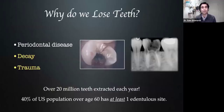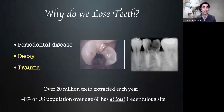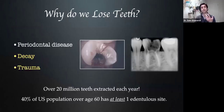The main reasons that we lose teeth are either periodontal disease or decay. Of course, the third outlier is trauma. As it relates to our lecture, when we're looking at crown lengthening, we're really focused on two different parts: decay and trauma. These stats continue to grow — there are over 20 million teeth extracted each year, and about half the population has at least one edentulous site later in life.